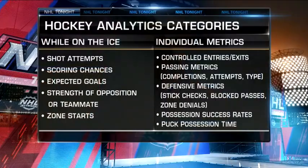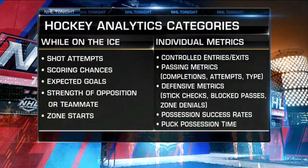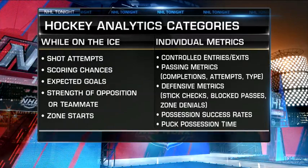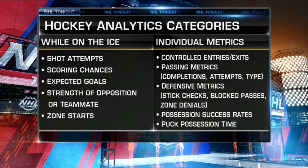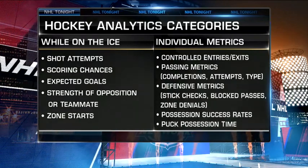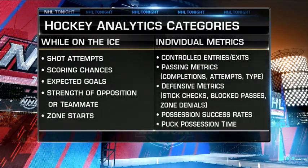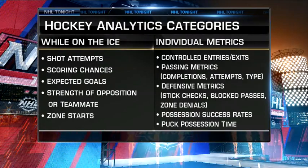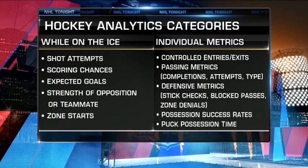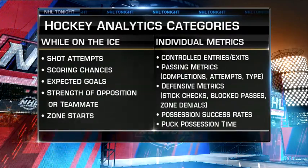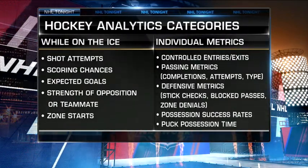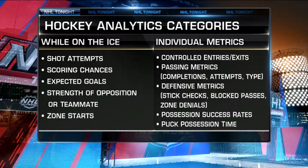You can separate the metrics into two things: what happens when a player is on the ice, and what is that individual player contributing. On the team side, you look at shot attempts, scoring chances, expected goals, the quality of opposition — like Marc-Édouard Vlasic eating tough minutes — strength of teammates, and zone starts, like Zach Werenski, an offensively gifted defenseman who starts a lot in the offensive zone.